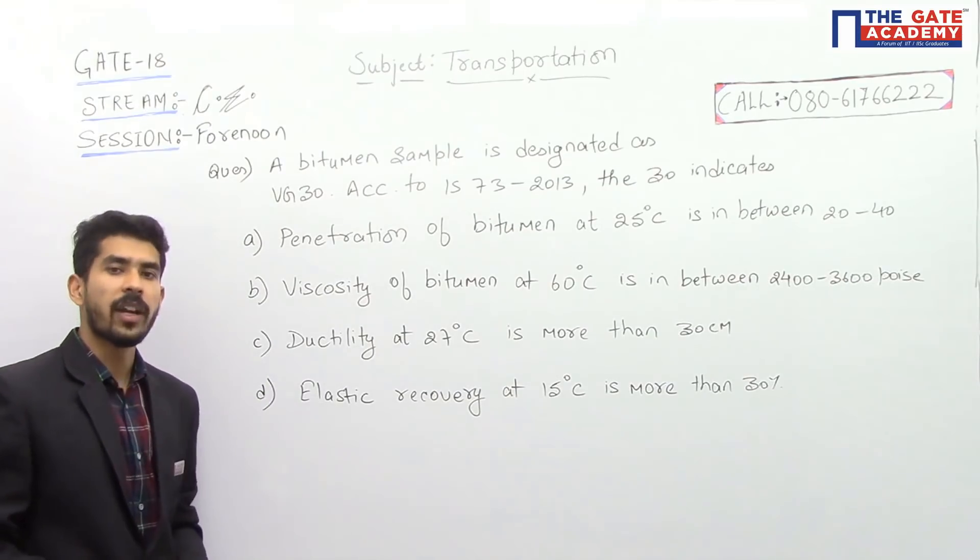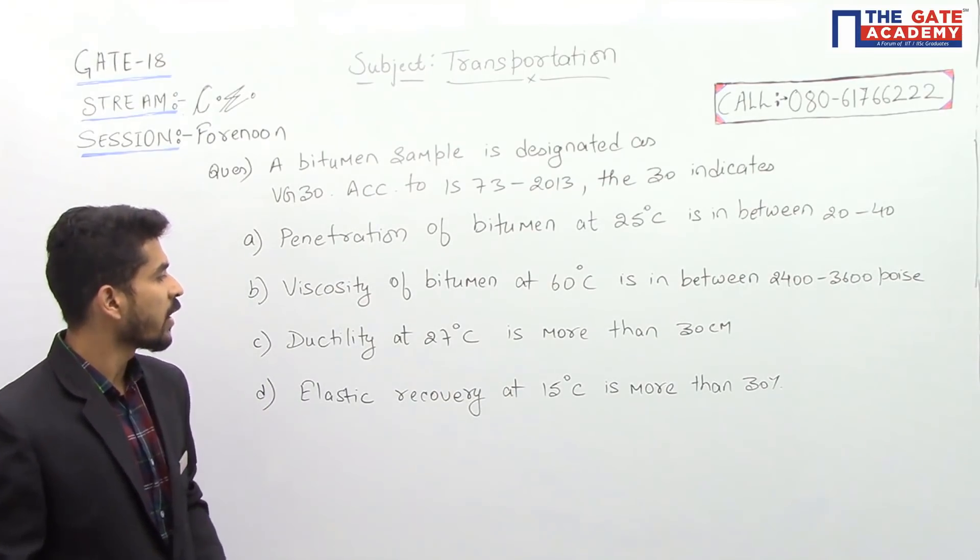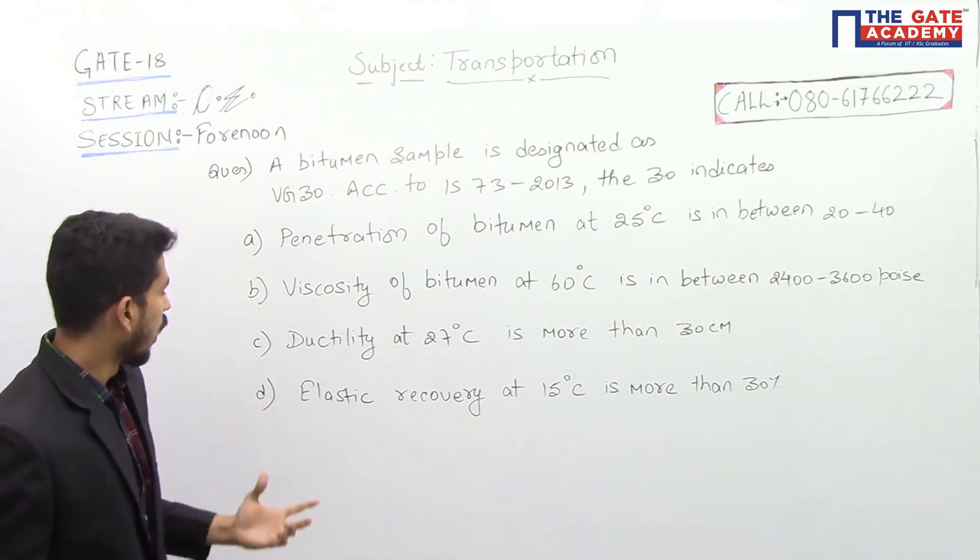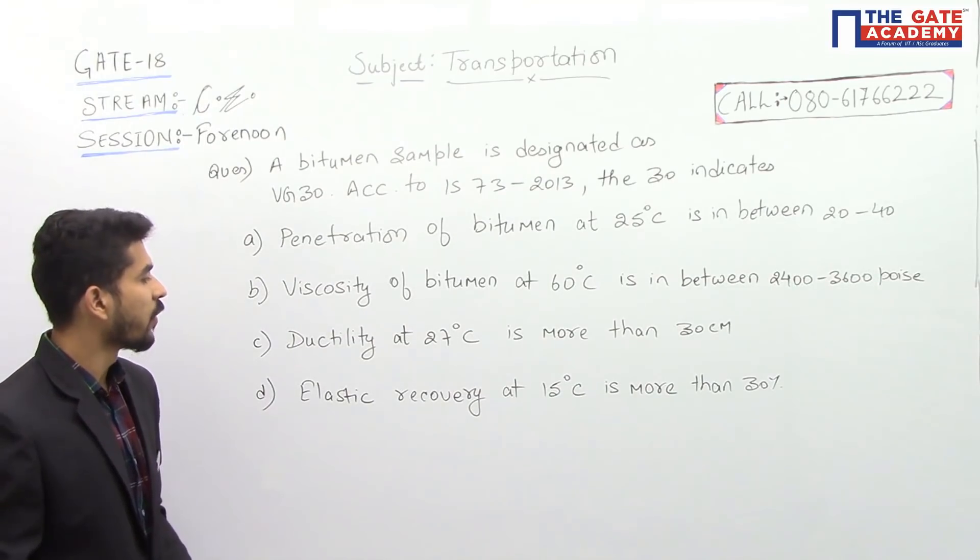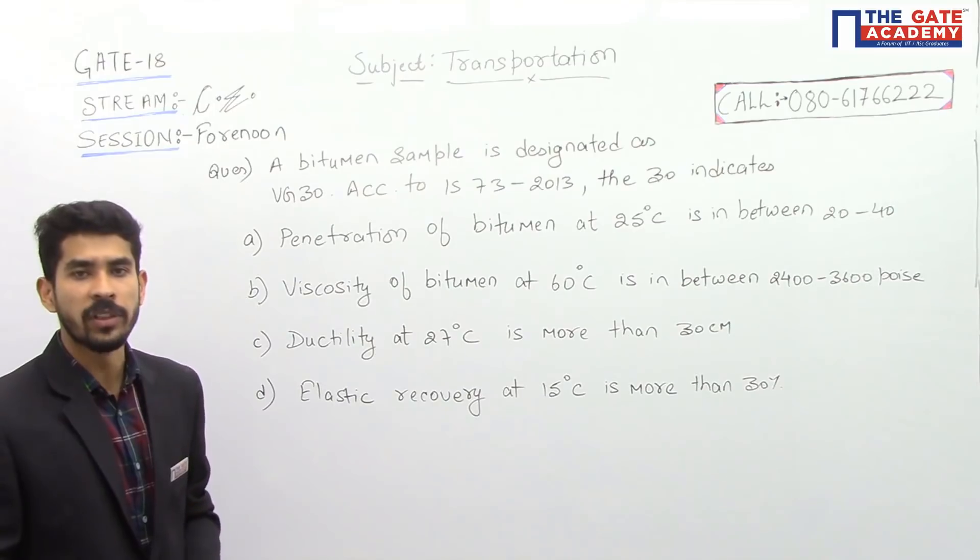Next option is ductility at 27 degrees C is more than 30 centimeters, and the last option is elastic recovery at 15 degrees C is more than 30 percent.